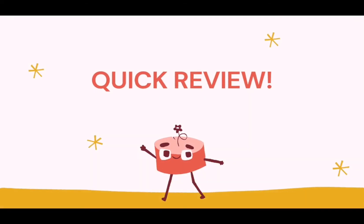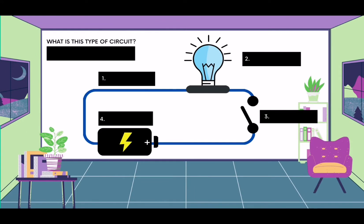But before that, let us have a quick review of our previous topic about the necessary conditions to make a bulb light up. Balikan natin ang iba't ibang components ng isang simple circuit. Number 1, wires. Number 2, light bulb.